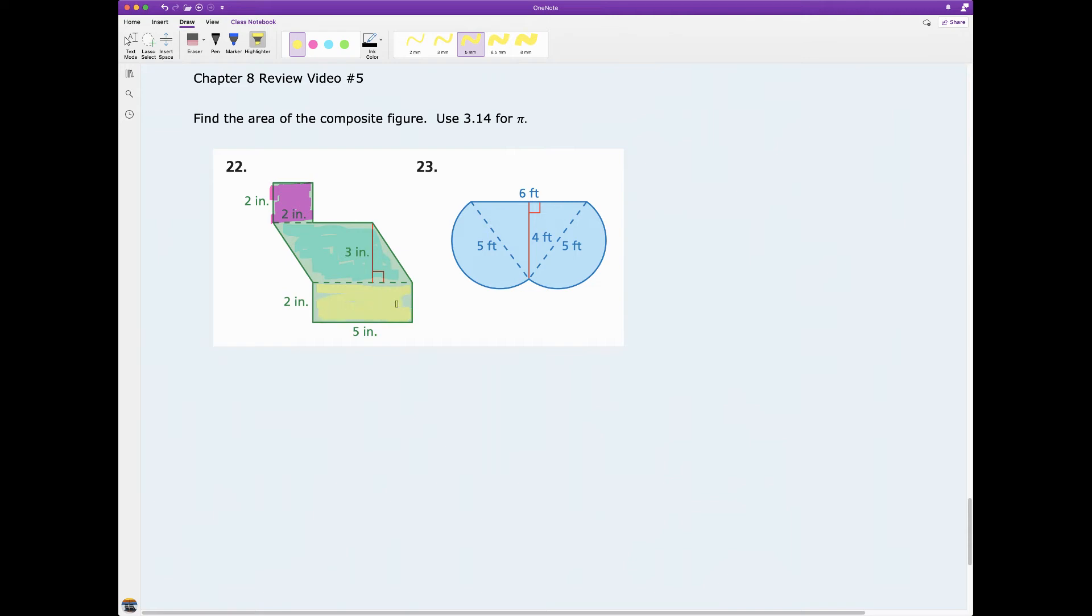Let's look at each one of these pieces one at a time. The area of my composite figure will be the area of this square, and each side is 2 inches, plus the area of this parallelogram which has a base of 5 inches and a height of 3 inches, plus the area of this rectangle which has a length of 5 inches and a width of 2 inches.